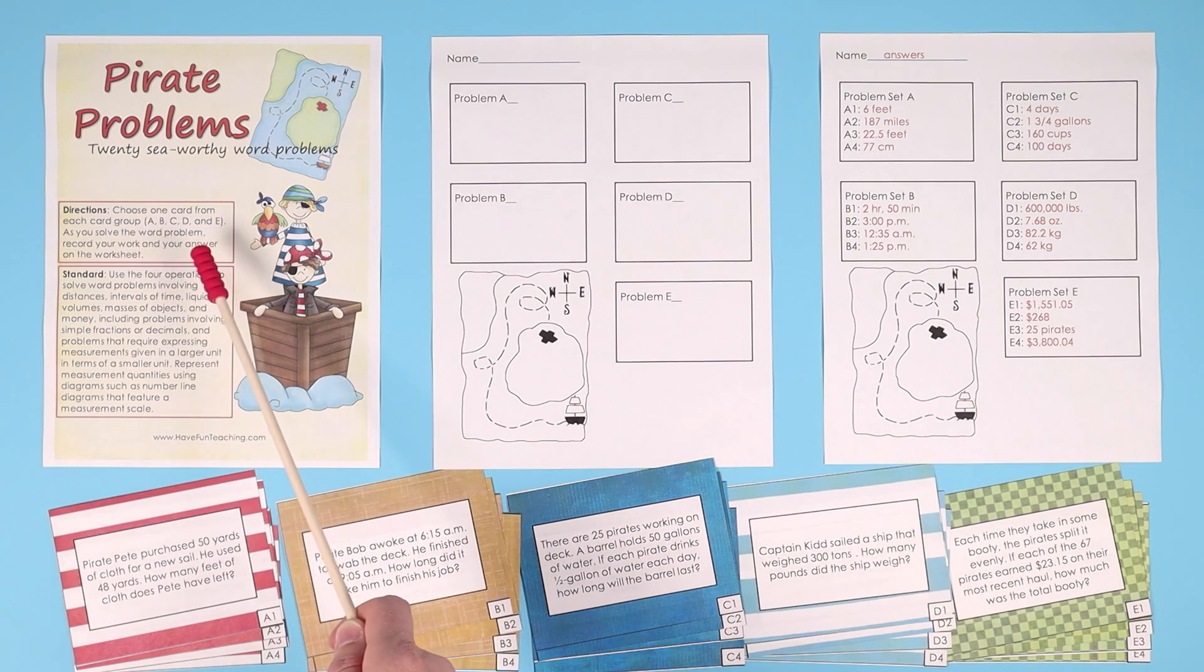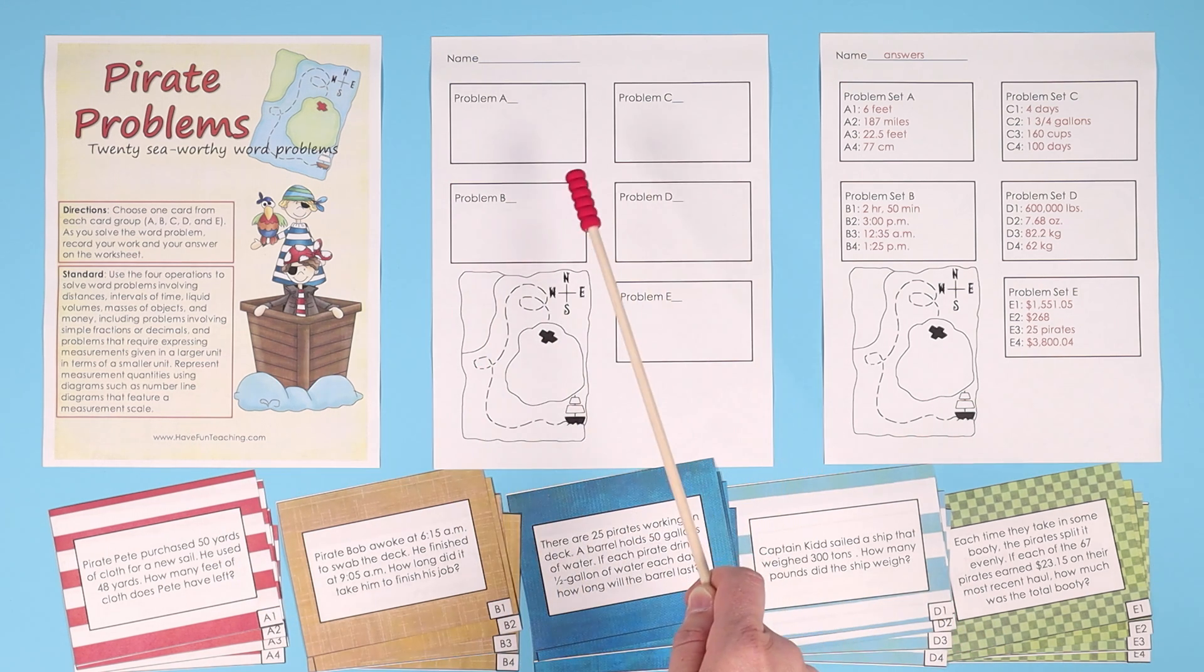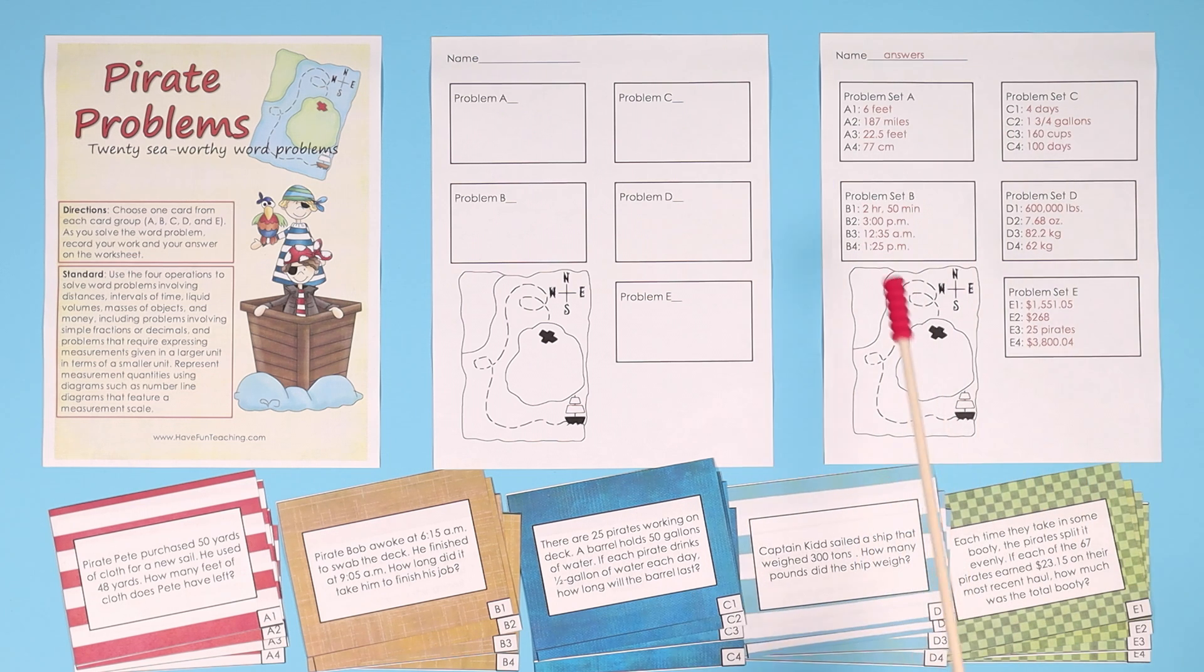The directions are: choose one card from each group A, B, C, D, and E. As you solve the word problems, record your answers on the answer sheet. We also include an answer key so you or your students can check the work.